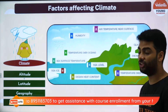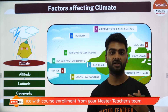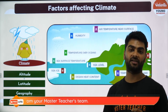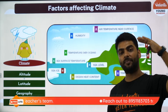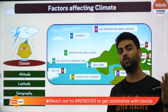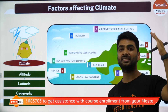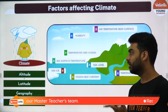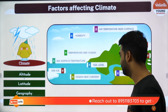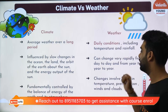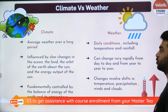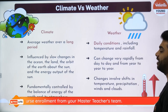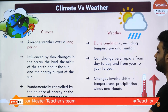Coming back to weather and climate: rainfall, temperature, humidity and wind speed are the elements of weather. Similarly, altitude, latitude, geography and topography are the four factors that affect the climate. If you are at a higher altitude, the temperature is usually lower — that is why we go to hill stations in summer. Delhi is dry because it is far from the sea; Mumbai is wet because it is next to the sea. Average weather over a long period of time is climate; daily atmospheric conditions are weather.